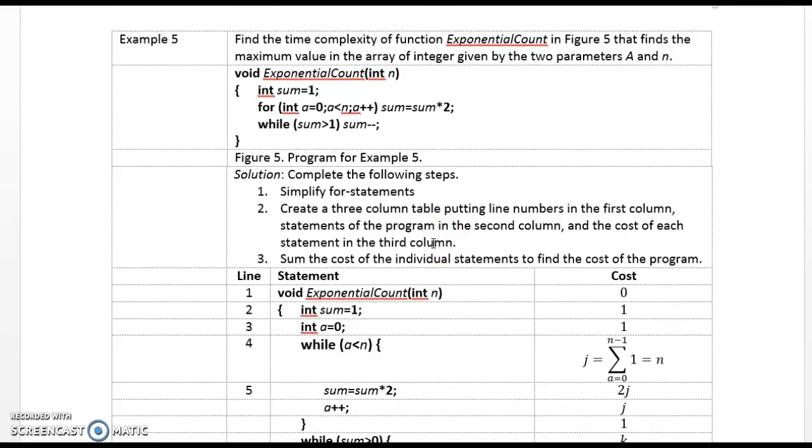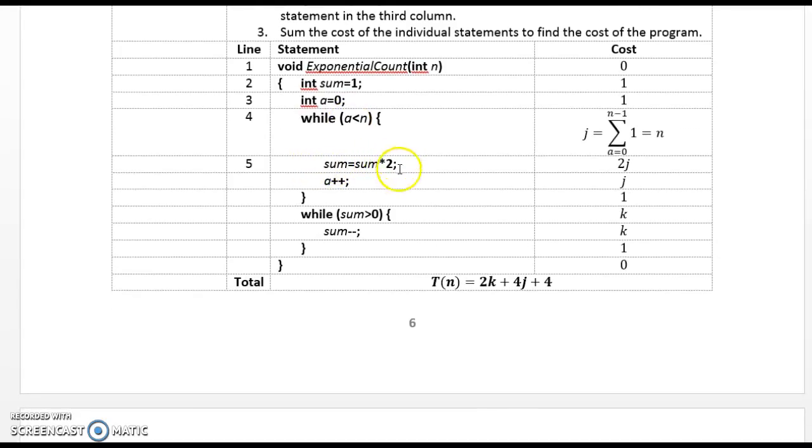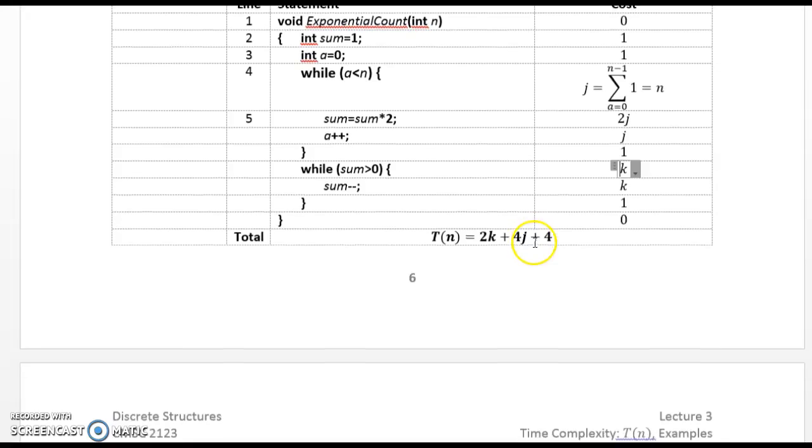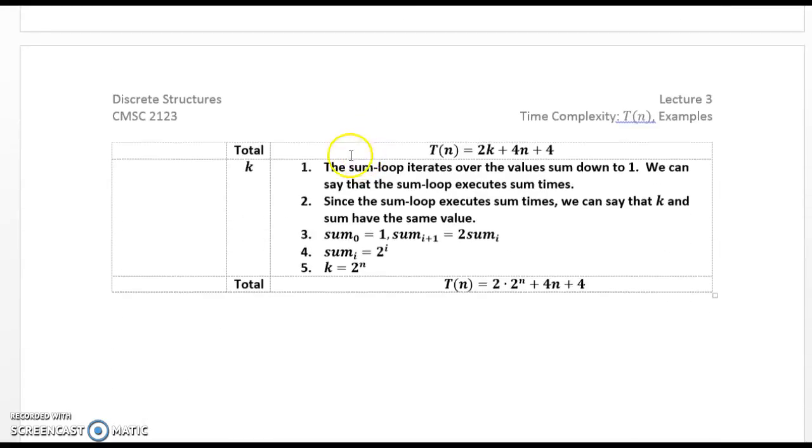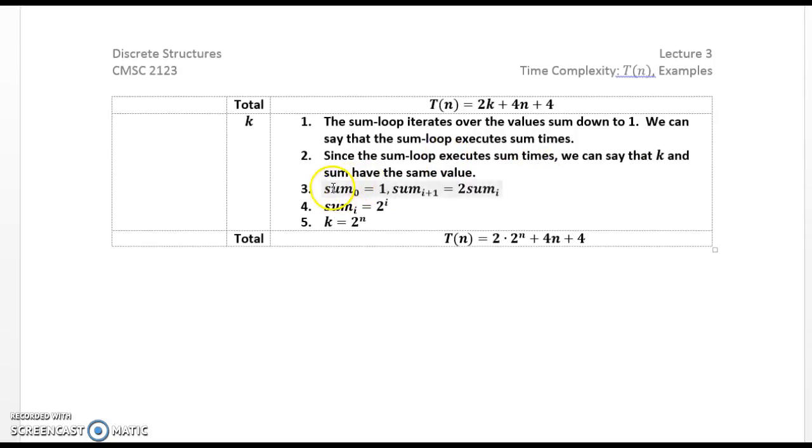Example 5. Find the time complexity of function exponential count in figure 5. So here I've got a for loop, and I do sum is assigned sum times 2. And I change the for loop to a while loop, and I do sum is sum divided by 2. So the real question here is, I can figure out how many times these are executed, but I don't know how many times the sum is greater than 0 is there, so I'm just going to call it k.